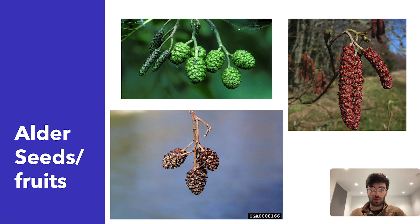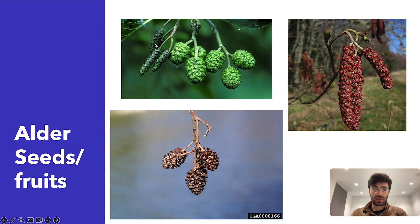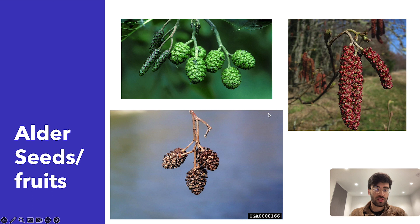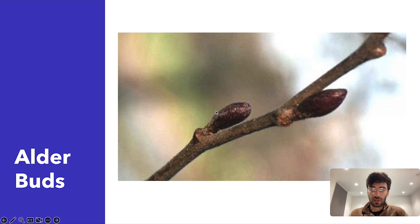Moving on to the seeds and fruits of the alder tree: there are different types of alder — I think there's a red and a green — and they have slightly different looking fruit and seeds. They look a little bit like small cones when they dry up, and some of them are a bit longer. If you've been outside you've probably seen these before. There are subcategories of alder tree, but this is the general look of the seeds.